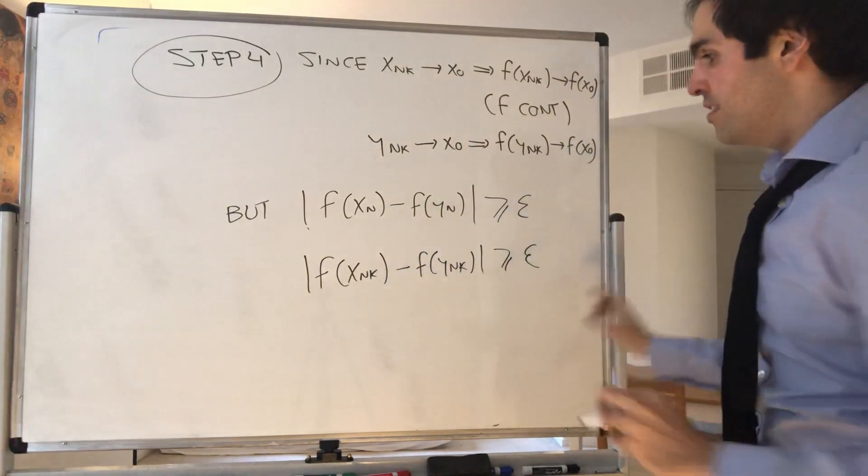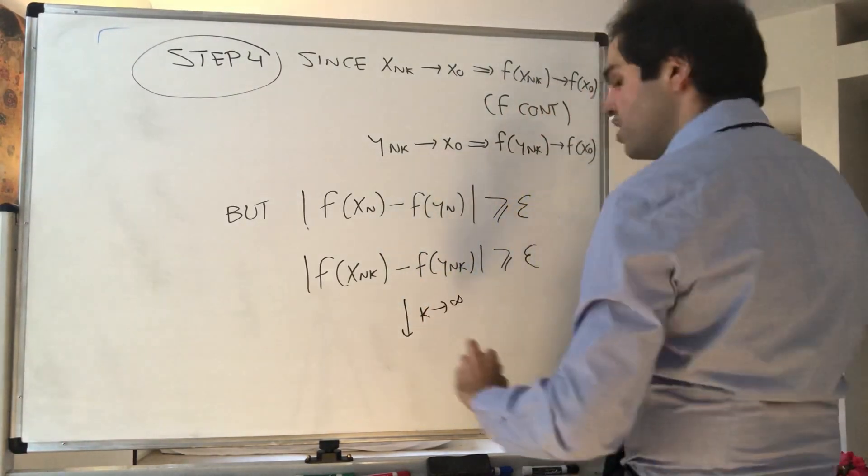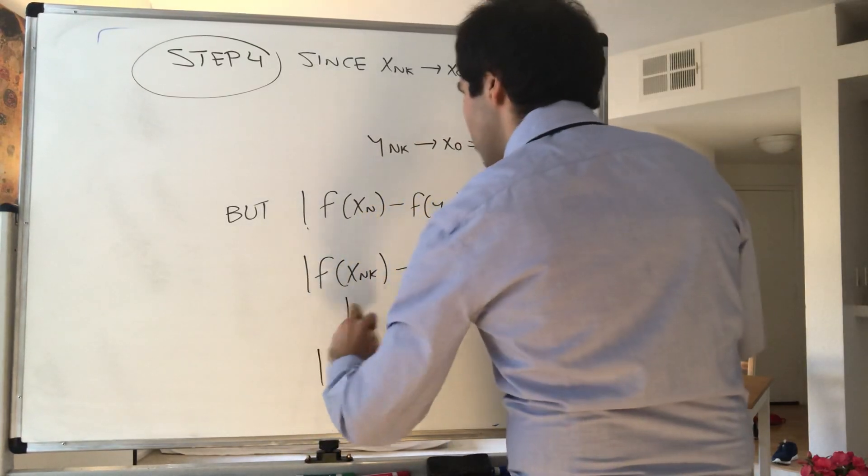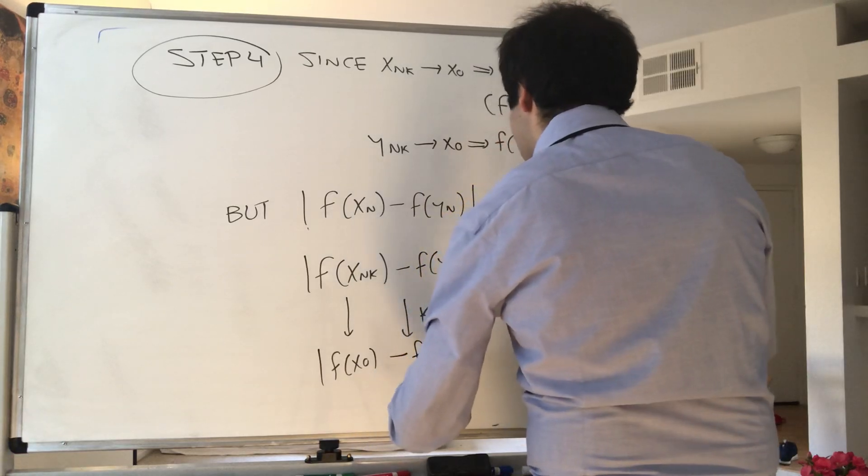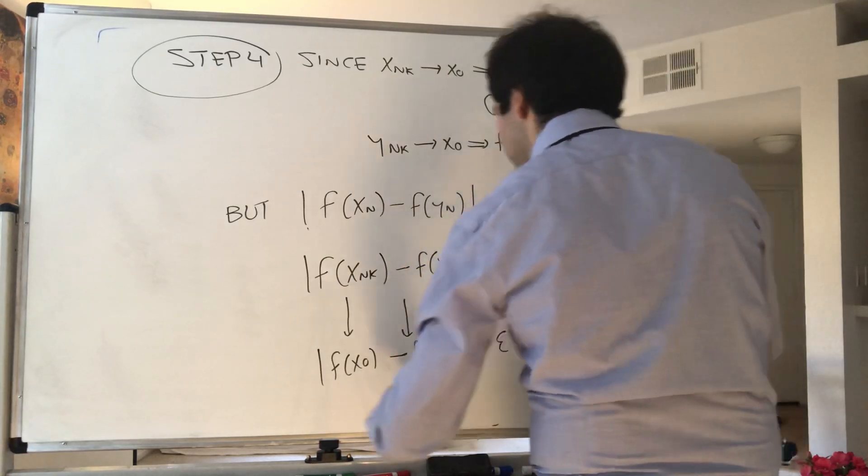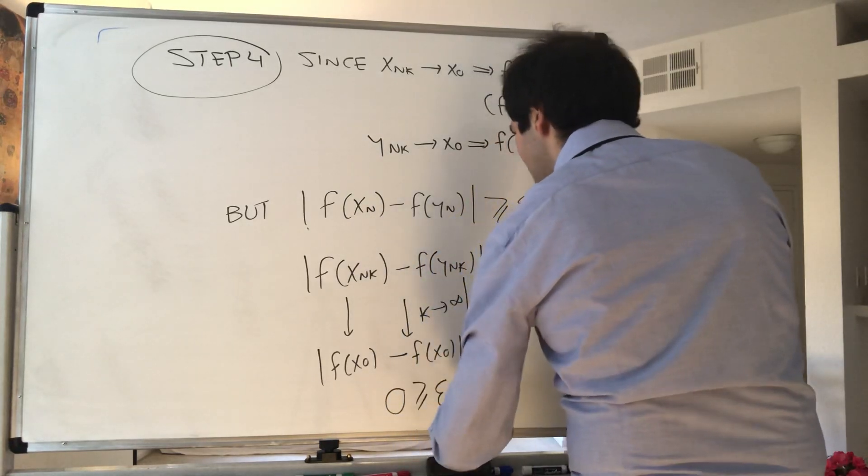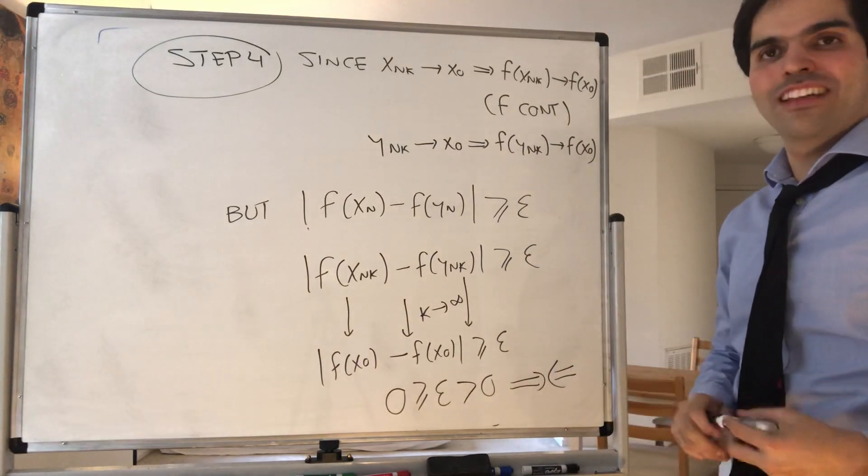But the point is, if you let k go to infinity, we then don't get that... See, this goes to f(x₀), this goes to f(x₀), is greater or equal to epsilon. So 0 ≥ epsilon, which is positive. And that's a contradiction because we can't have both things.